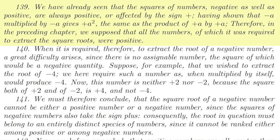We have already seen that the squares of numbers, negative as well as positive, are always positive, or affected by the sign plus. Having shown that minus a multiplied by minus a gives plus a squared, the same as the product of plus a by plus a. Therefore, in the preceding chapter, we suppose that all numbers, of which it was required to extract square roots, were positive. So he starts at the exact same point anyone else would.